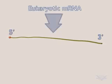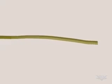Let's see the process in action. Eukaryotic mRNA, the substrate for translation, has a unique 3' end called the poly-A tail.